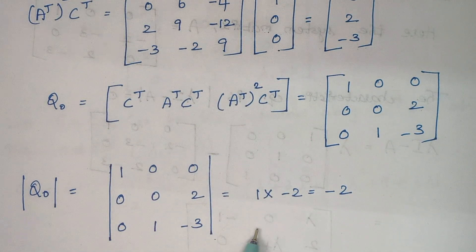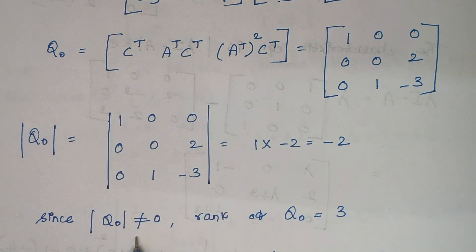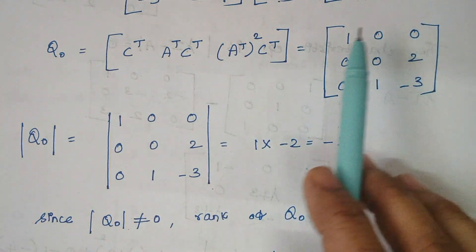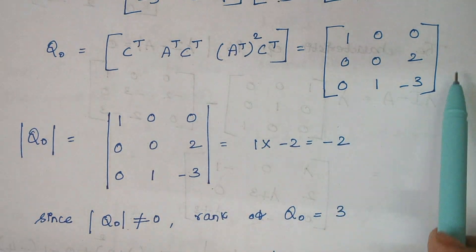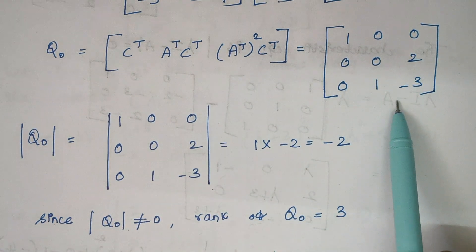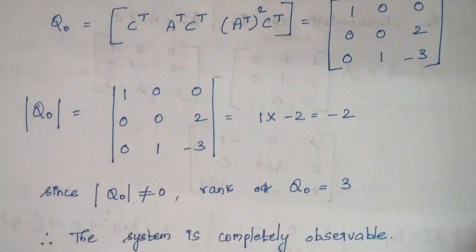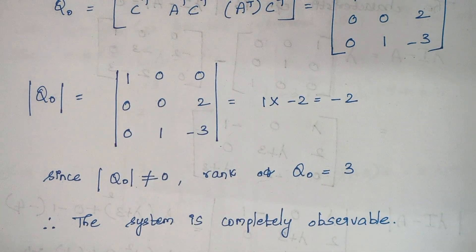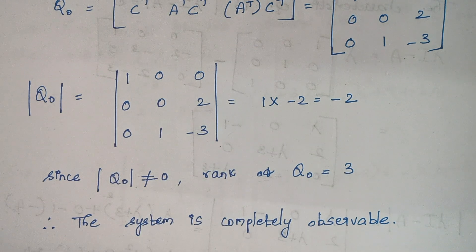The next step is to calculate the determinant of QO. The determinant value equals −2. Since the determinant is not equal to 0, and the rank of Q-naught — the observability matrix — is 3 (it is a 3×3 matrix), the rank is 3. Therefore the system is completely observable. In conclusion, for this problem the system is both completely controllable and completely observable. If you have any doubts, let me know in the comment section. Thank you.